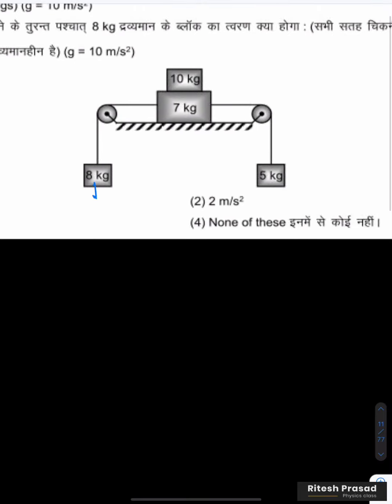8 kg downward force 8g, that is 80 newton. 5 kg, 5g, that is 50 newton. This thing is T1 and T2. So 7 kg, tension left side T1, right side T2.